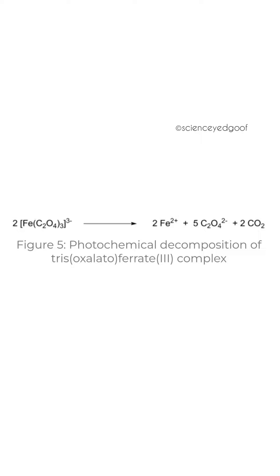That iron gets reduced to iron(II). Those newly formed iron(II) cations combine directly with the ferric cyanide in the interior of the paper fiber to form the insoluble precipitate of Prussian blue.